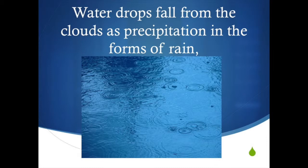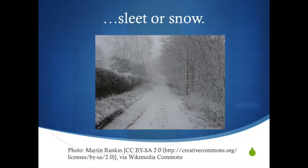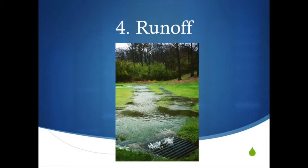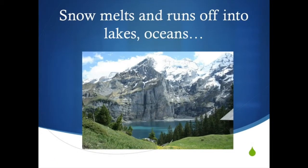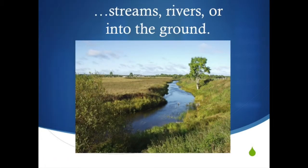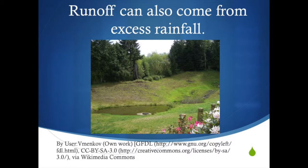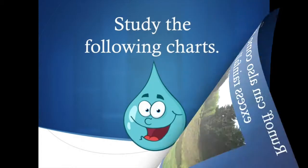Precipitation falls in the forms of rain, sleet, or snow. In cold climates, precipitation accumulates as snow or ice. Runoff: snow melts and runs off into lakes, oceans, streams, rivers, or into the ground. Runoff can also come from excess rainfall.